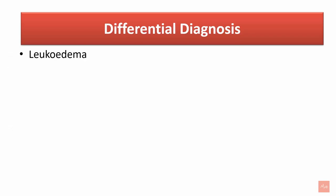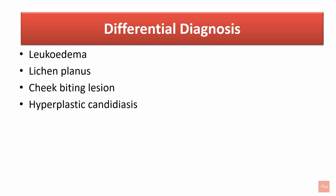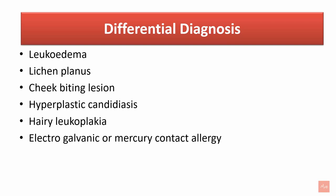Differential diagnoses include: leukoedema, a physiologic variation of oral mucosa generally not associated with tobacco, seen bilaterally on buccal mucosa, and lesions disappear after stretching the mucosa; lichen planus, not necessarily associated with tobacco and commonly seen as a bilateral lesion; cheek-biting lesion; hyperplastic candidiasis; hairy leukoplakia, seen in immunocompromised patients and commonly located on the lateral border of the tongue; and electrogalvanic or mercury contact allergy; and white sponge nevus.